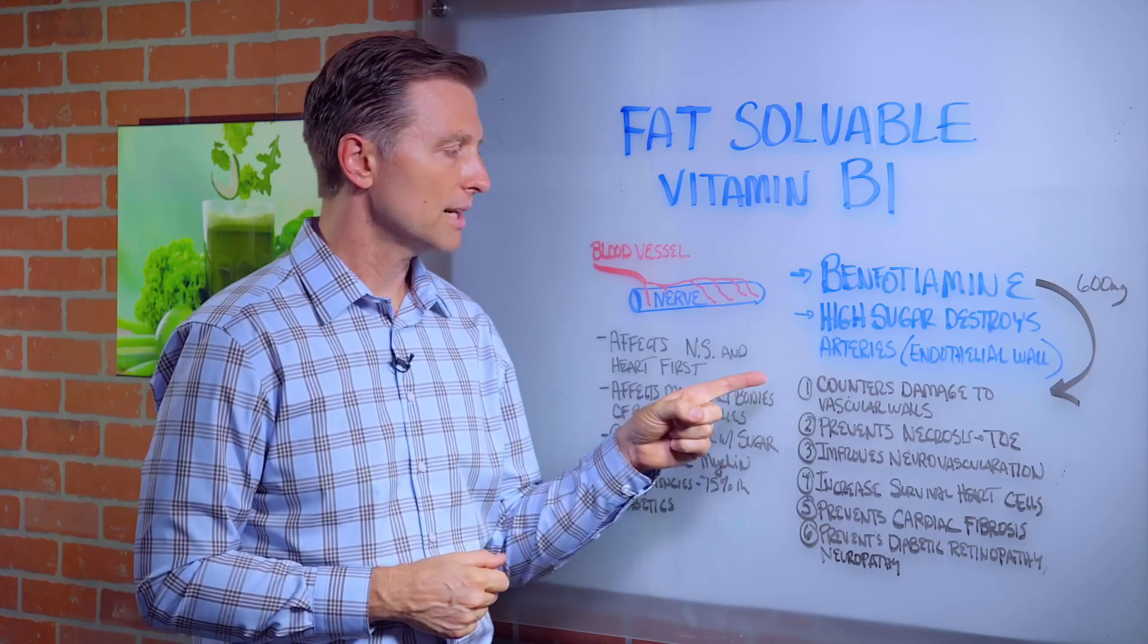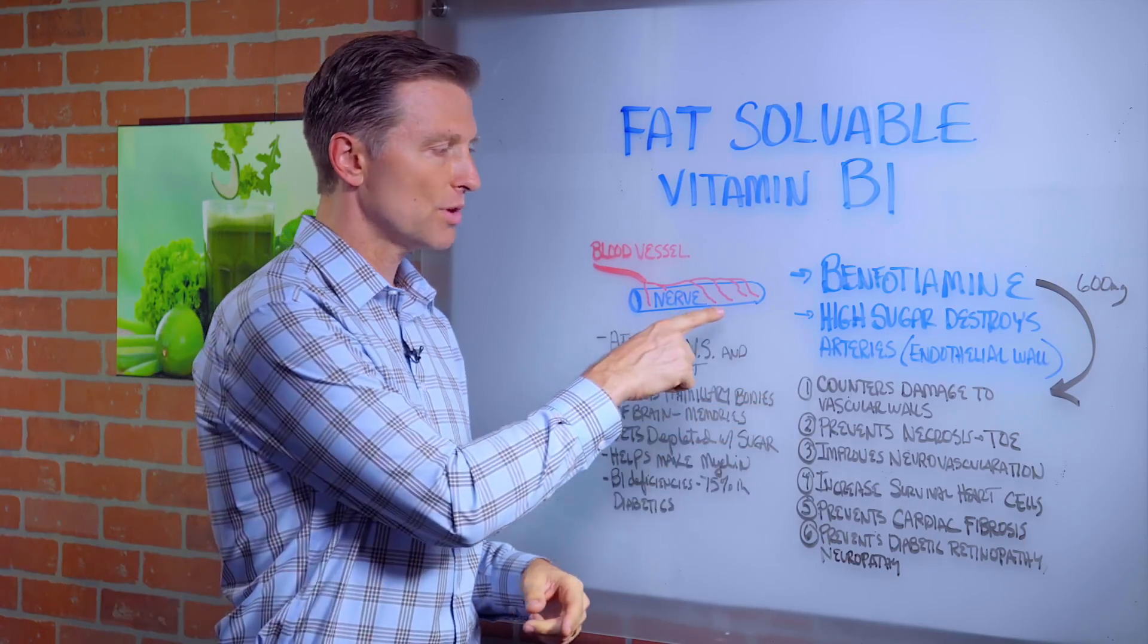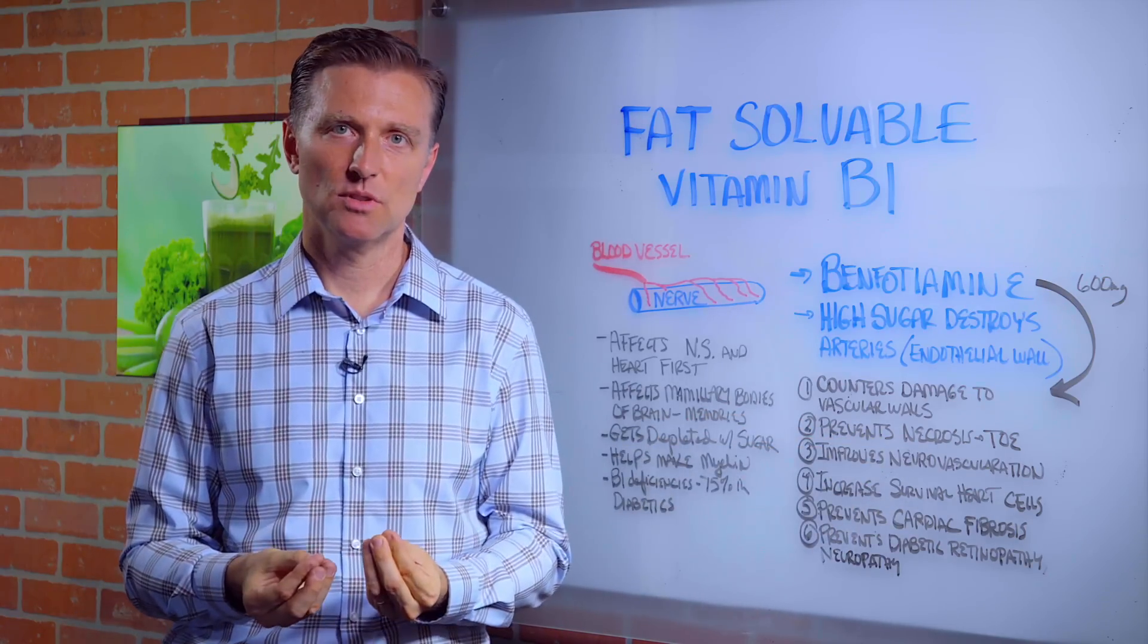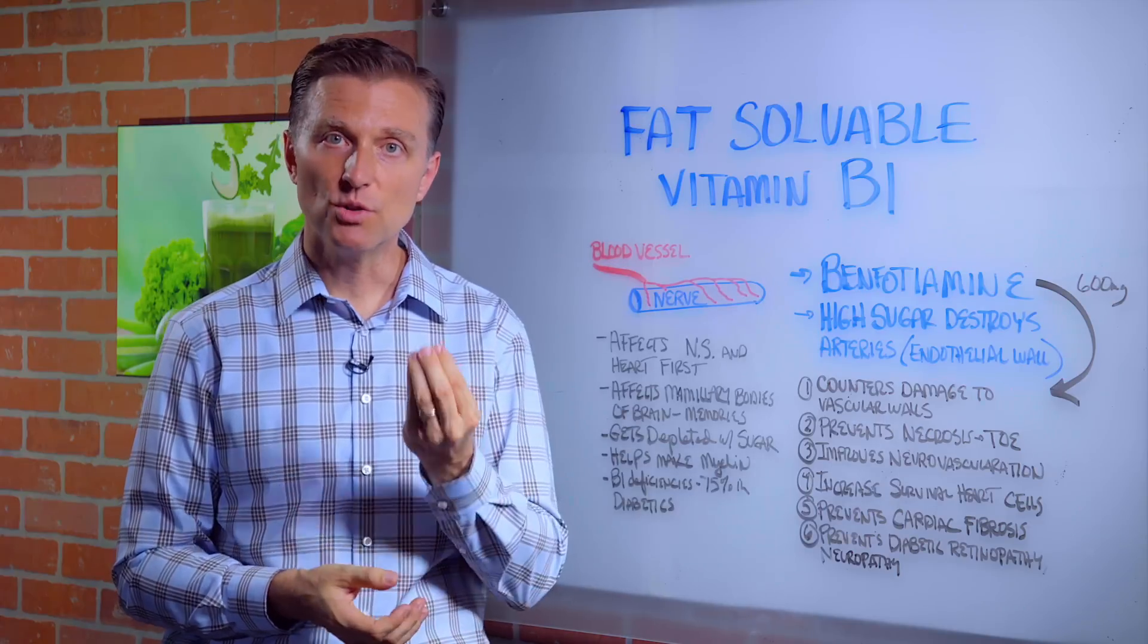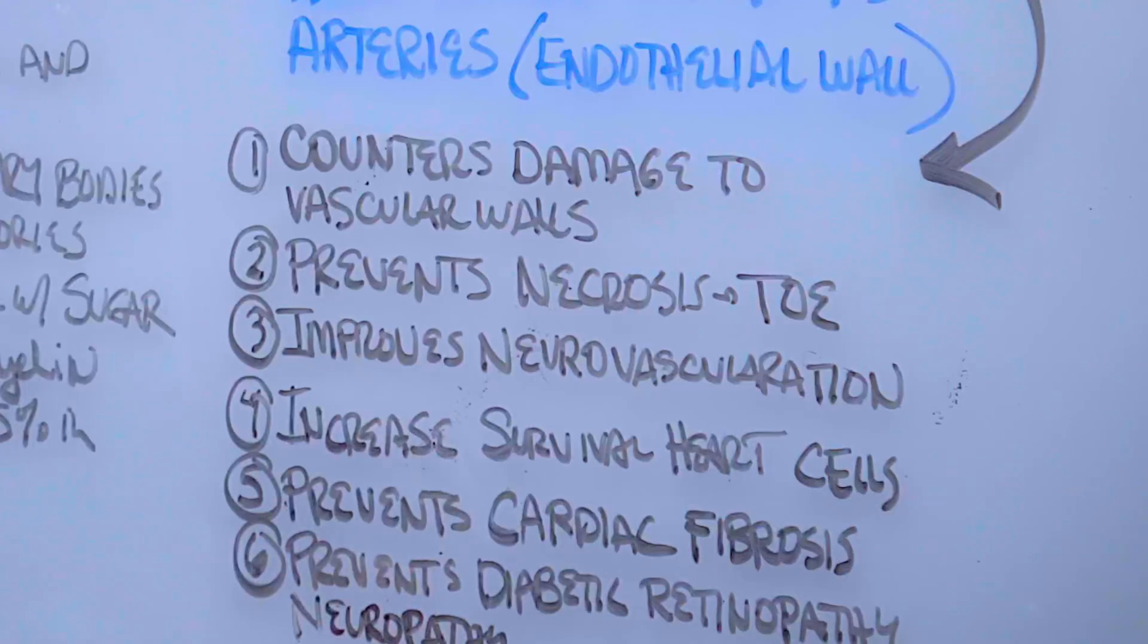So vitamin B1 counters damage to the vascular walls that support the nervous system. It also prevents necrosis. That's like dead and dying tissue. So you know, with diabetics, you lose your toes, right? Well, B1 will prevent that.